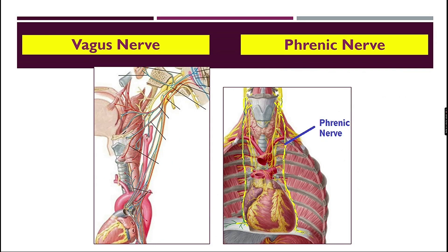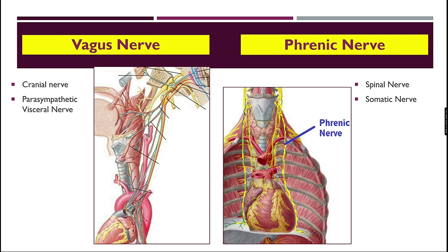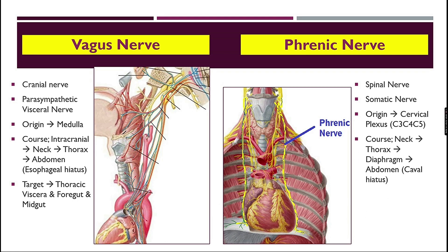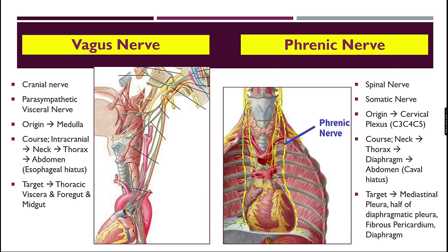Key differences: the vagus nerve is a cranial nerve; the phrenic nerve is a spinal nerve. The vagus is a parasympathetic visceral nerve for thorax and abdomen; the phrenic is a somatic nerve. The vagus originates from the medulla oblongata in the brainstem; the phrenic nerve originates from the cervical plexus — C3, C4, and C5. The vagus passes through the skull, neck, thorax, and enters the abdomen through the esophageal hiatus. Its targets are the thoracic viscera, foregut, and midgut. The phrenic nerve passes through the neck to the thorax and supplies the diaphragm, with some branches entering the abdomen via the caval hiatus.